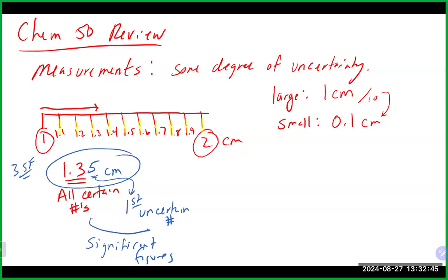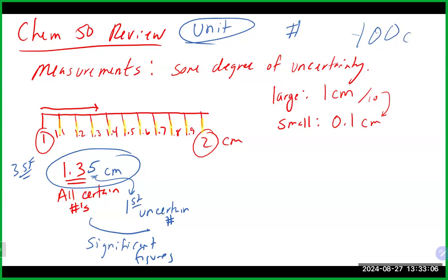Also really important with measurements is the unit. A number by itself is useless — if I say I have 100, nobody knows what I have. I may have $100, may have 100 pennies, may have 100 apples. Without the unit, the number is worthless. So when you record stuff in your notebook and lab and everywhere else in calculations, you should always have units associated with whatever you are doing.